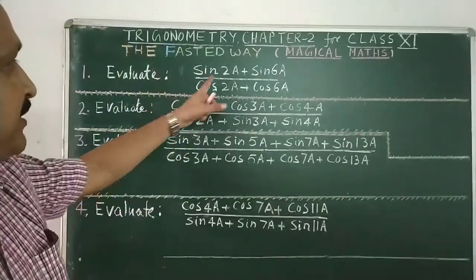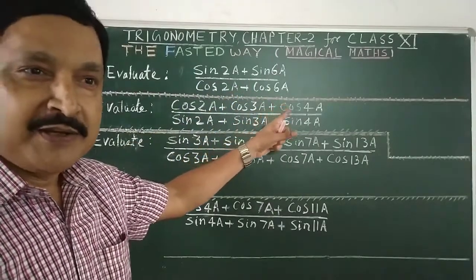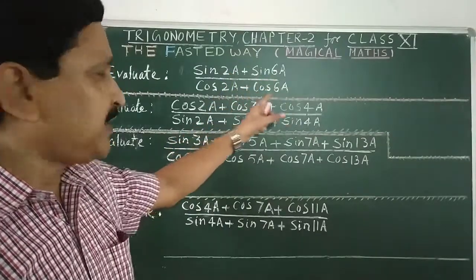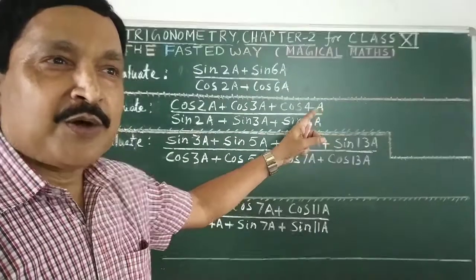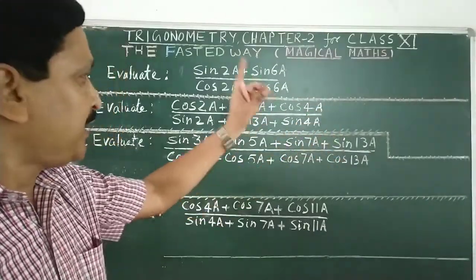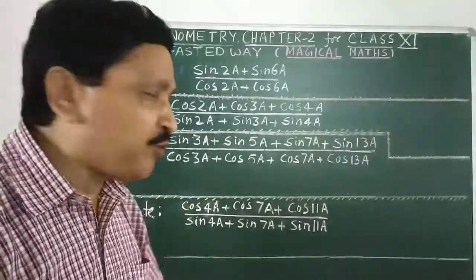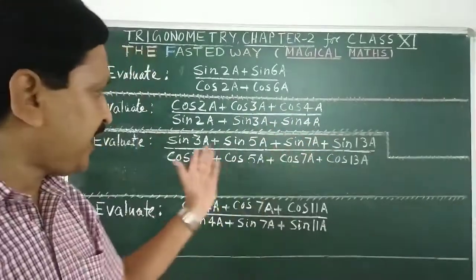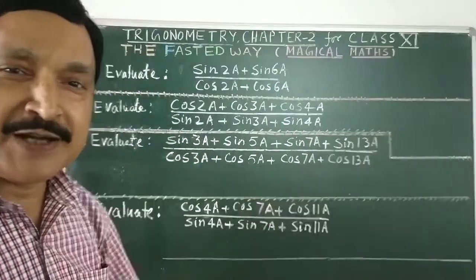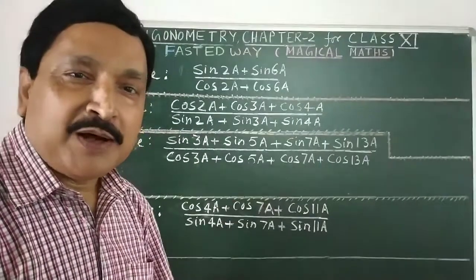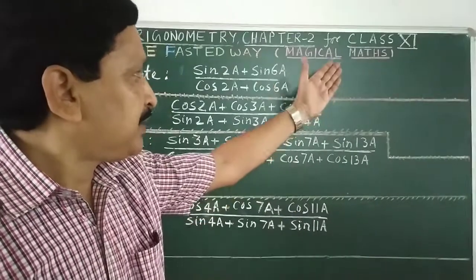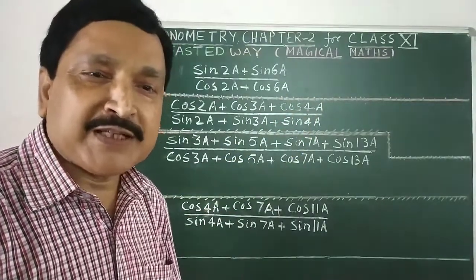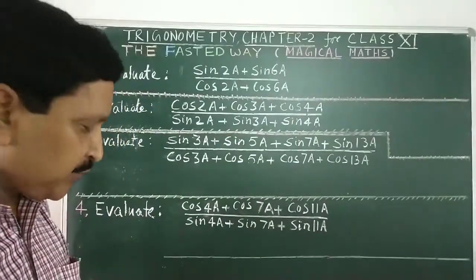So just see, evaluate this sin 2A plus sin 6A by cos 2A plus cos 6A. You know the formula sin C plus sin D and cos C plus cos D. The students or the teachers are generally in habit of using the formula. When you are in habit of using the formula, then what will you do for this? There are 3 terms. No direct formula is famous for the 3 terms. Likewise 4 terms, 5 terms and so on. It is difficult. But I am going to give you the fastest technology, a valuable way to learn mathematics. This will be helpful to the senior students for competitive examination also. They can quickly answer the question within few seconds.